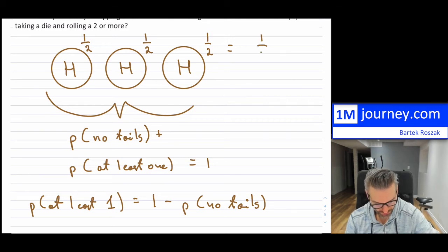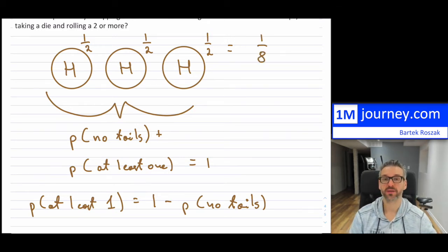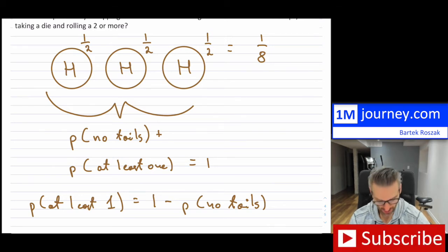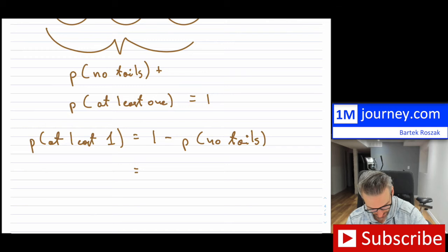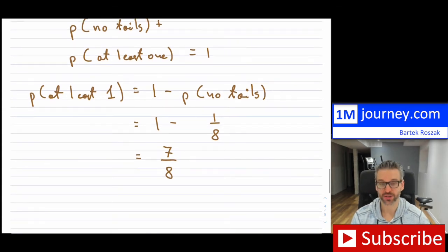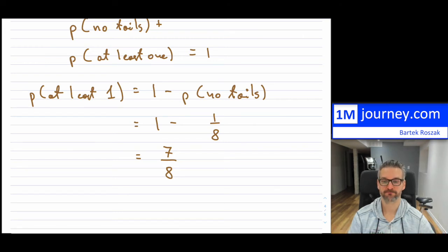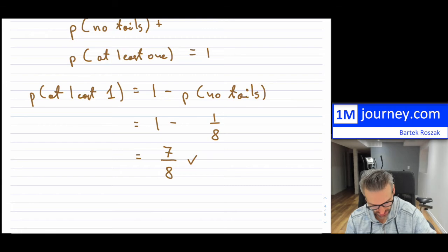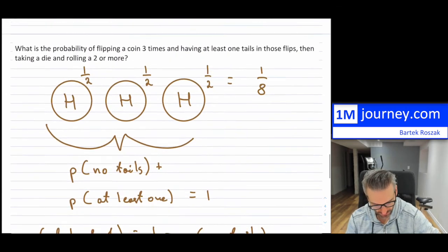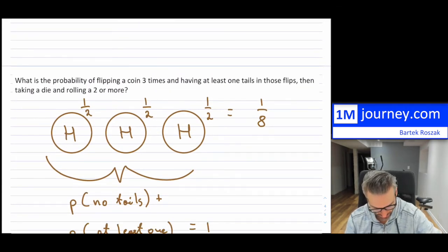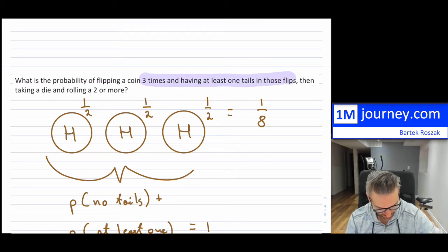So in total, you'll notice that the probability of getting heads on all three is basically one over eight. So here, this is gonna be one minus one over eight. So this is seven over eight. So our odds are actually pretty good to get at least one tails on a flip if we were gonna be flipping three times. So that's just the first part, the probability of that.